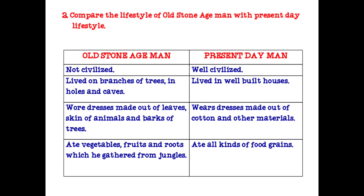Compare the lifestyle of old stone age man with present day lifestyle. Old stone age man: not civilized, lived on branches of trees in holes and caves, wore dresses made of leaves, skin of animals and bark of trees, ate vegetables, fruits and roots gathered from jungles. Present day man: well civilized, lives in well-built houses, wears dresses made of cotton and other materials, eats all kinds of food grains.